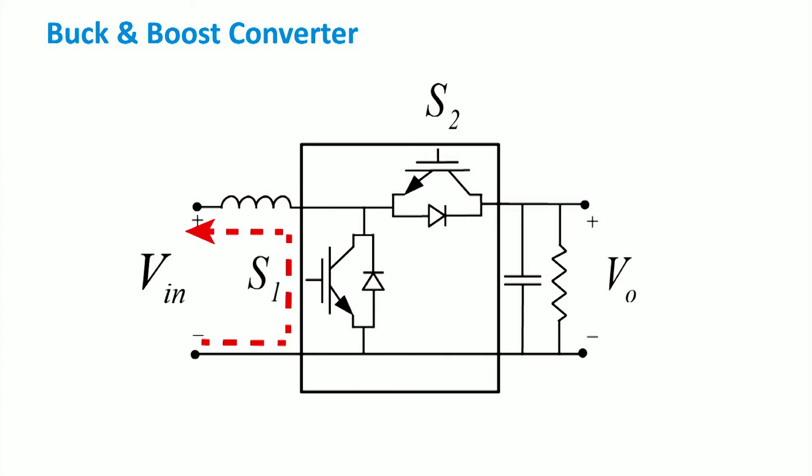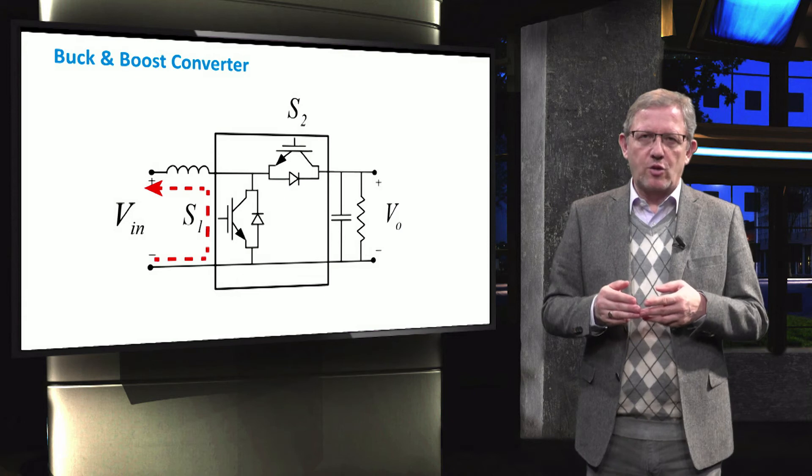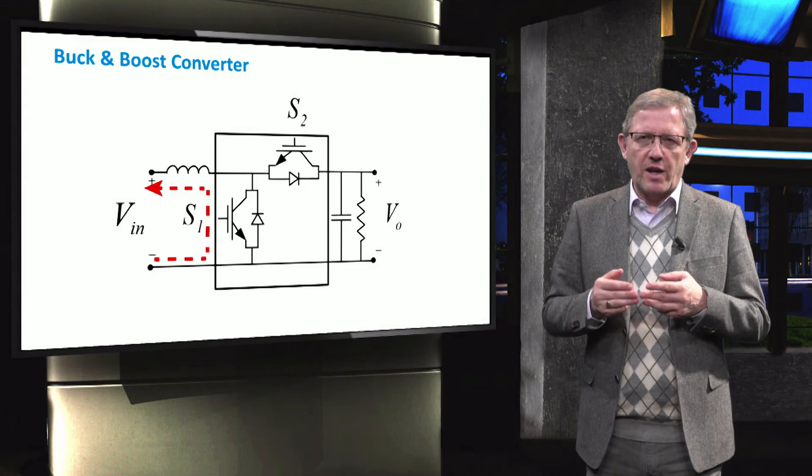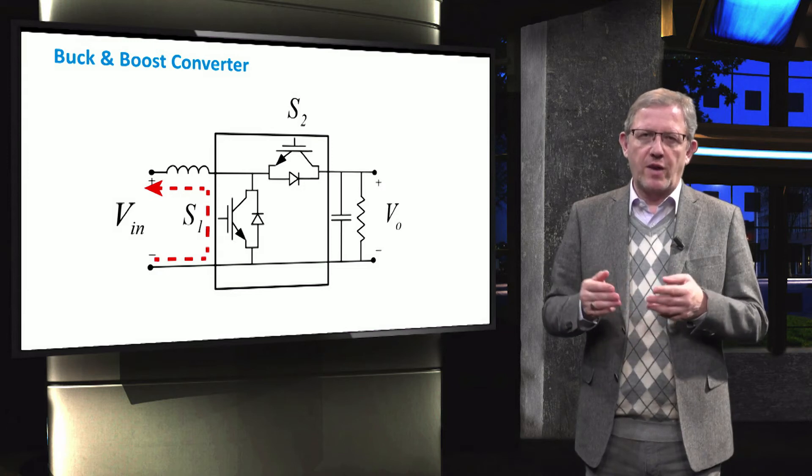The current can flow in either direction, but the polarity of the DC voltages VIN and Voutput remains fixed. It is called a two-quadrant converter because current can flow in either direction, but the polarity of the DC voltages remains fixed.